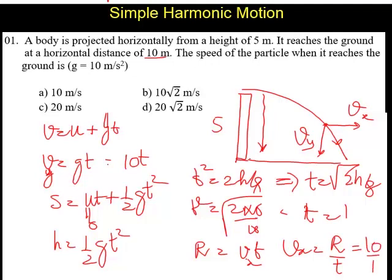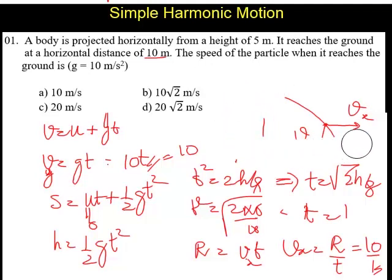This is gt is 10t and this is 10, t is again 1, so this is also 10 we can say. vx, vy we have calculated. Now we can go for calculation of v itself. Calculating v.